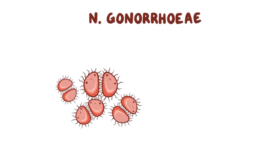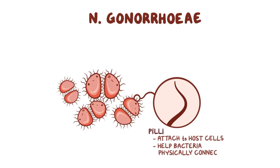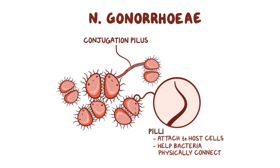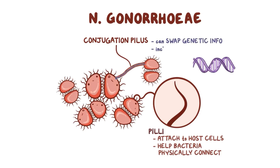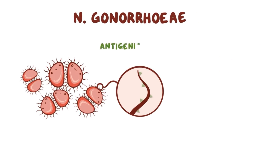First, N. gonorrhoeae has pili — little thread-like extensions radiating from the bacterial surface. The pili help N. gonorrhoeae attach to a host's mucosal surface. Also, they help bacteria get physically connected with each other, making what's known as a conjugation pilus, which is a hollow, tiny rod through which bacteria can swap genetic information back and forth, including antibiotic resistance genes. Interestingly, N. gonorrhoeae pili are made of antigenic proteins which can vary with every infection, what's known as phase variation.